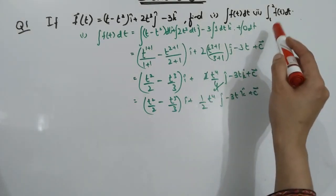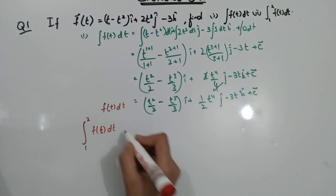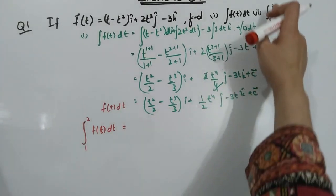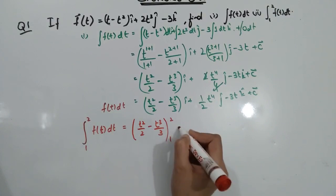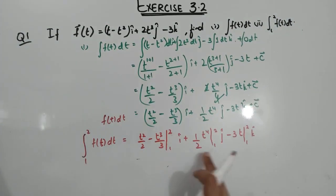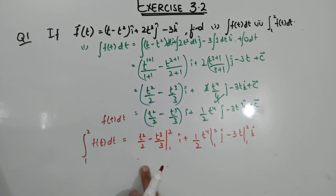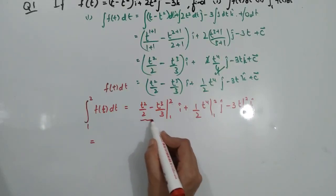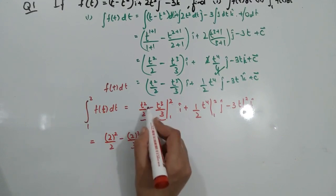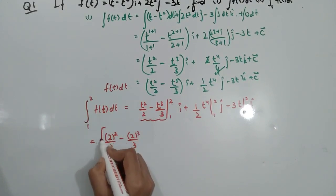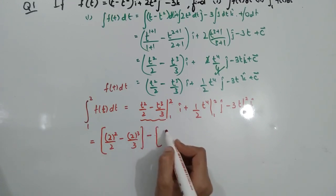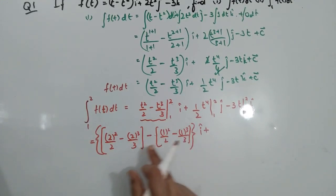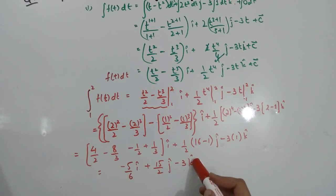In the second part, we apply limits. In integration, we have a lower limit and an upper limit. First the upper limit is applied, then we subtract the lower limit. When limits are given, we call it a definite integral, and plus c does not appear. Put the upper limit 2 everywhere: 2 squared over 2 minus 2 cubed over 3. Then subtract the lower limit by putting 1. After taking LCM and simplifying, you get the final answer for the second part.